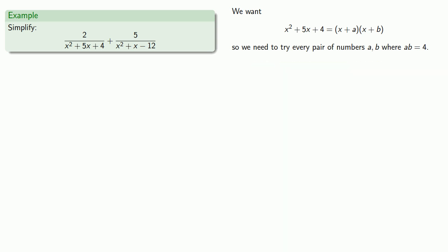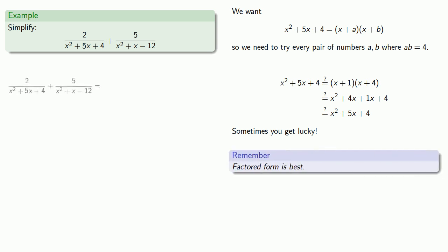Well, two numbers that multiply to 4 are 1 and 4, and so maybe x squared plus 5x plus 4 is x plus 1 times x plus 4. We have to check, so we'll expand. And sometimes we get lucky. Now remember, factored form is best, so let's rewrite this fraction with the denominator in factored form.